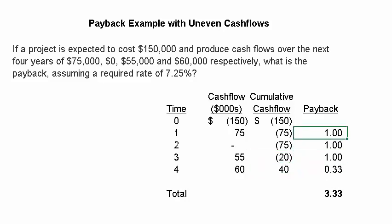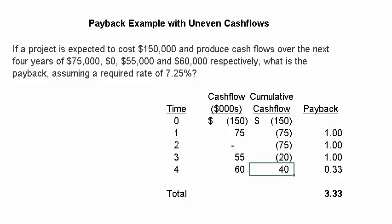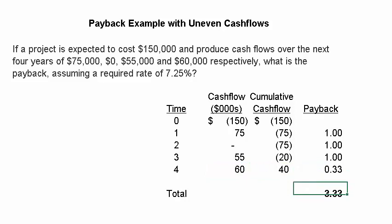To do the calculations, I look and see if the cumulative cash flow is negative. If it's negative, we know that is a full year's payback. At the end of year one, we're in the hole. At the end of year two, we're still in the hole. At the end of year three, we still haven't achieved positive payback. But in the fourth year, we see that we've got $20,000 left out of $60,000 — so 20 divided by 60 is a third of a year. We add up all those periods and come up with a simple payback, not a discounted payback, of 3.33 years.